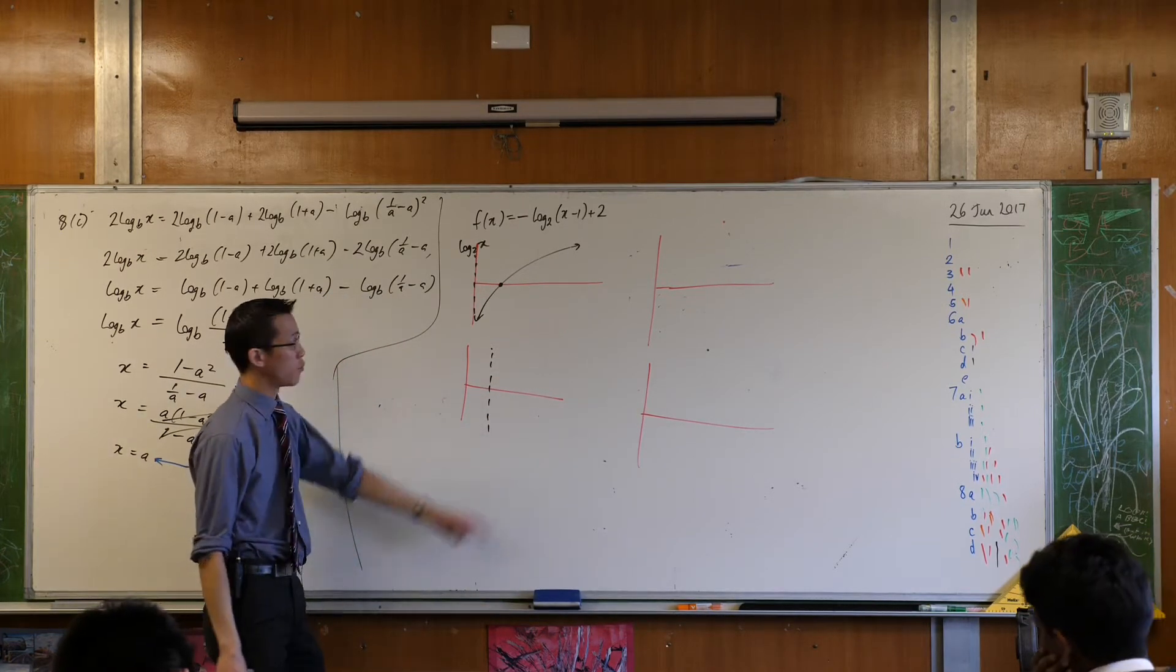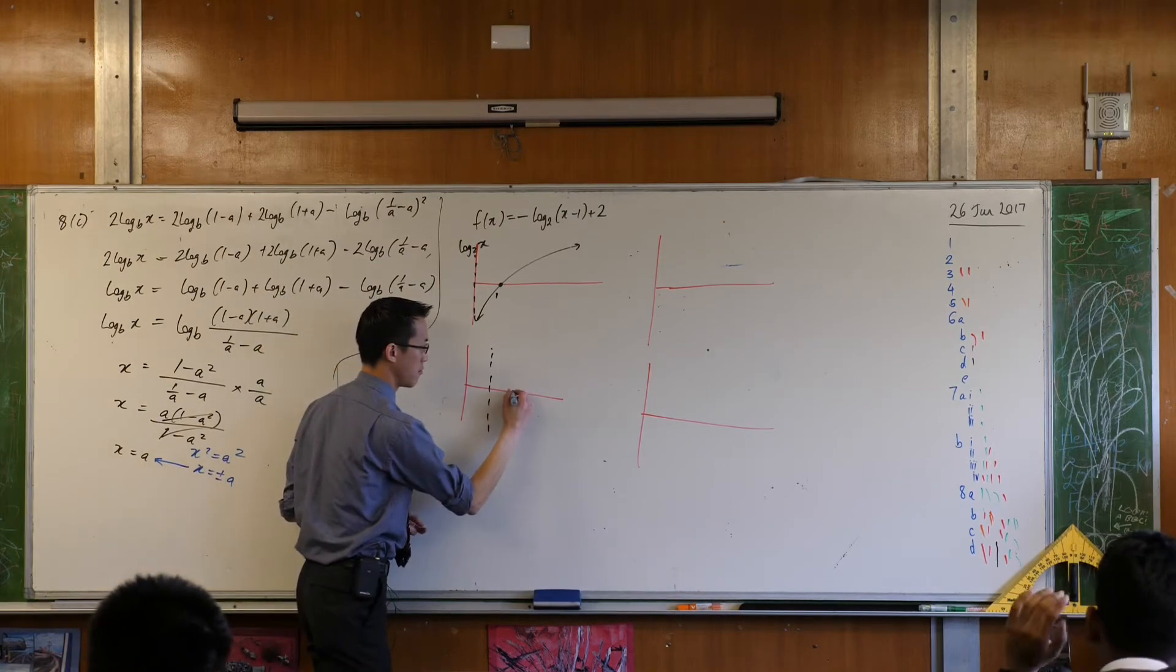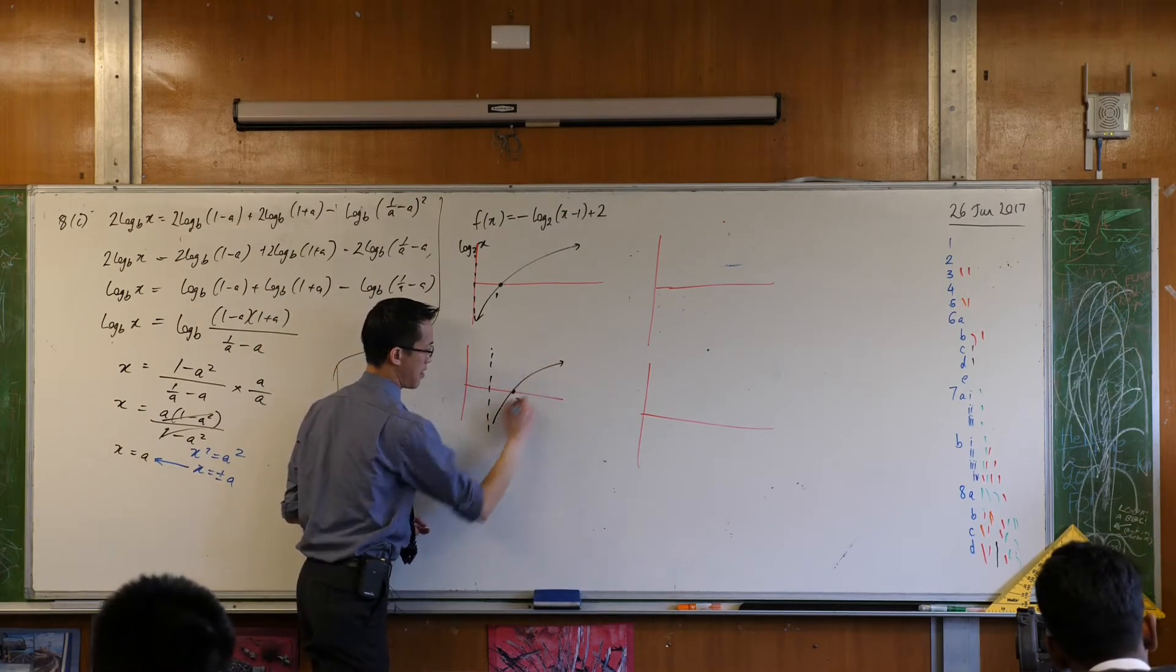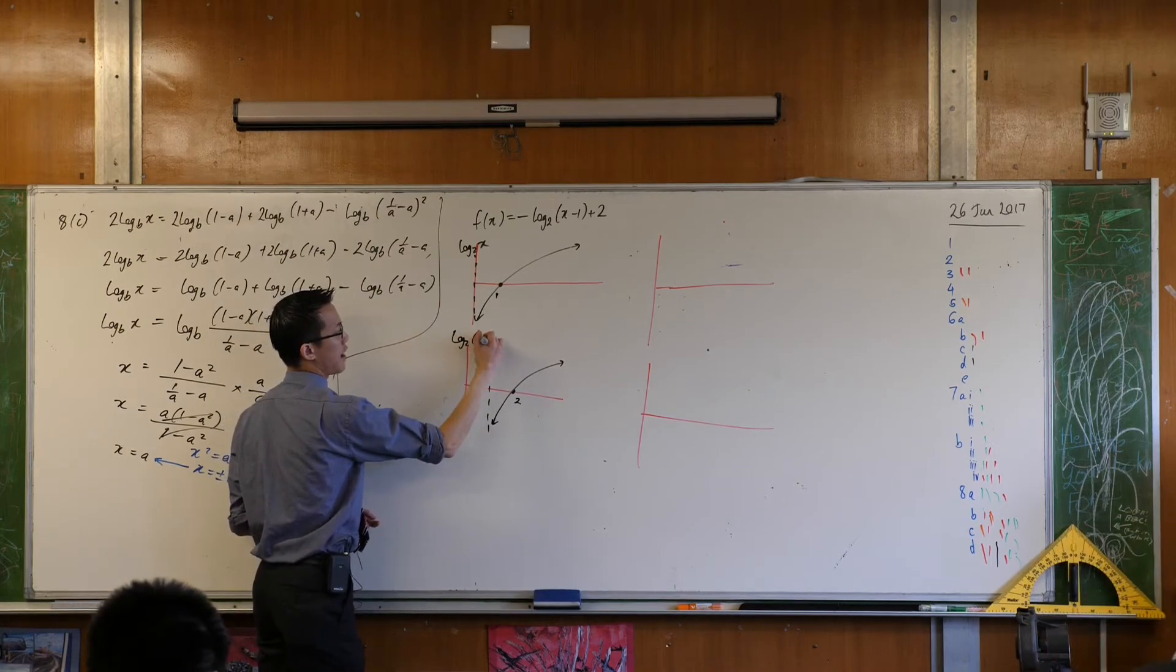And it also changes the intercept, which is no longer at 1, it's now at 2. And that's it. That's all that's changed. This is log base 2 of x minus 1.